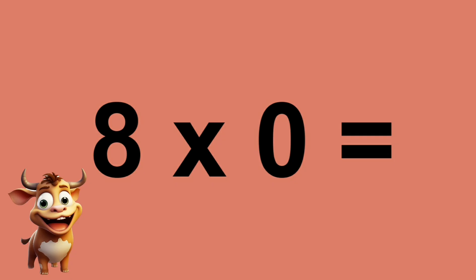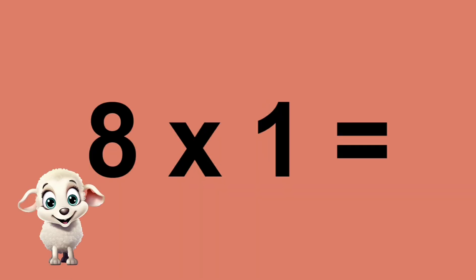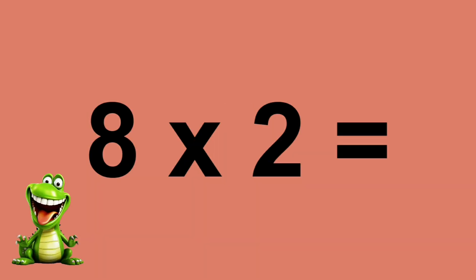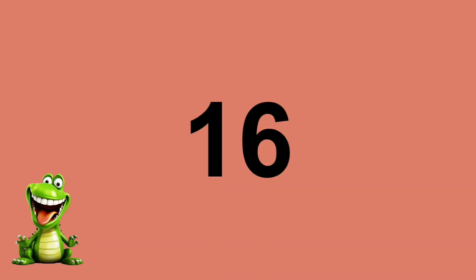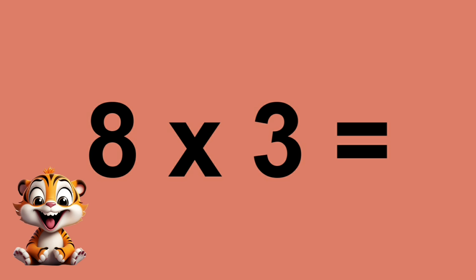Eight times zero equals zero. Eight times one equals eight. Eight times two equals sixteen. Eight times three equals twenty-four.